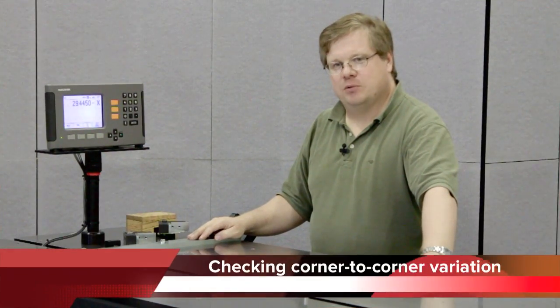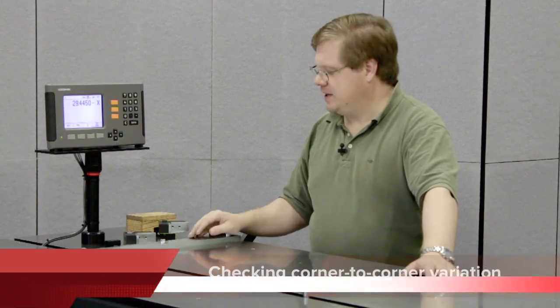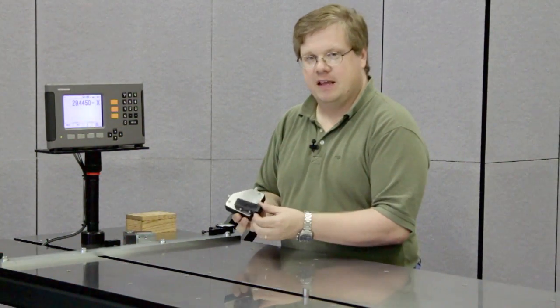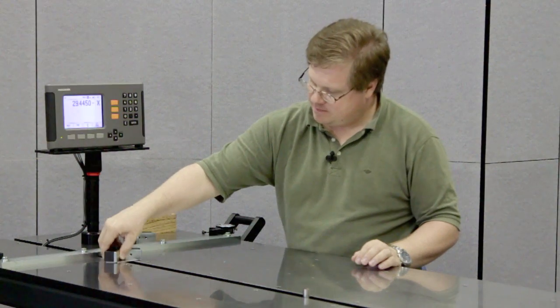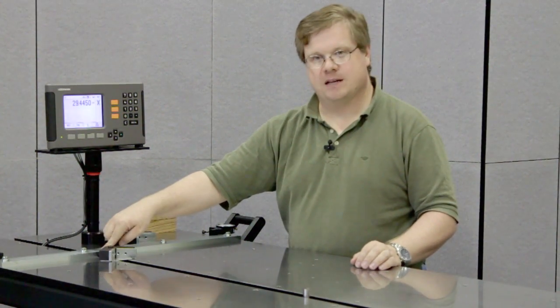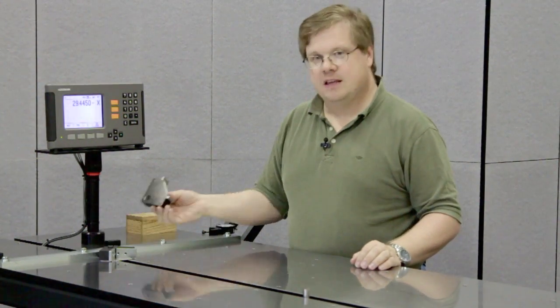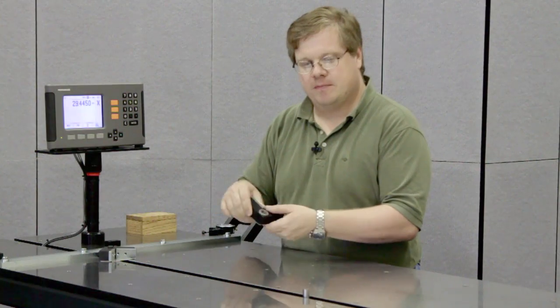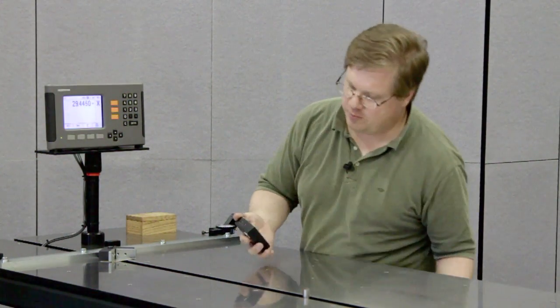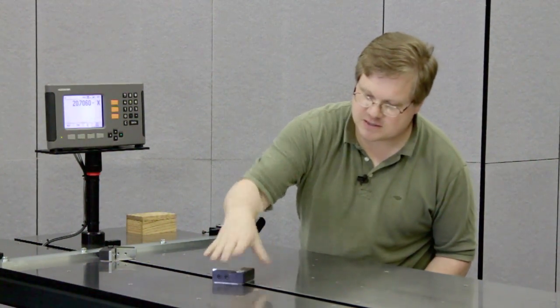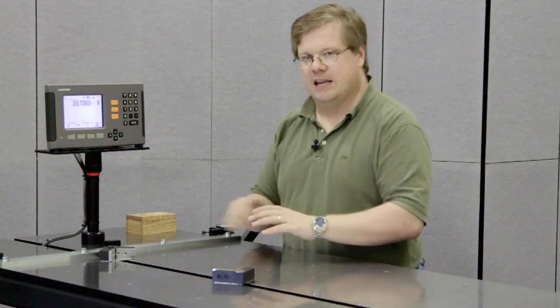This is our diagonal block attachment. It comes in two pieces. One piece has a pivot that goes into the slot, and you slide that piece up against the stop bar. The other piece has a bushing designed to slip over our probe. So you slip the other piece over the probe, and now you're ready to check corner to corner variation on a part.